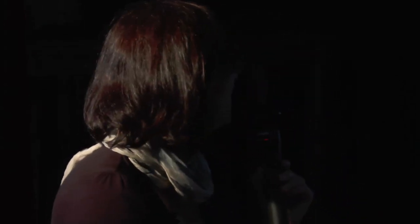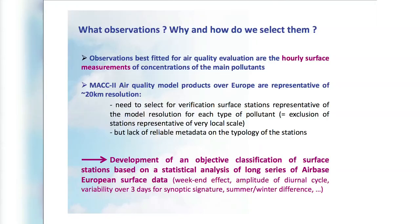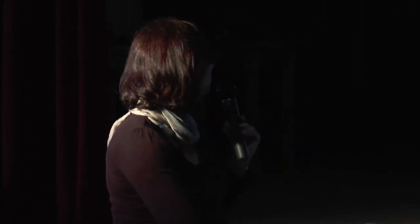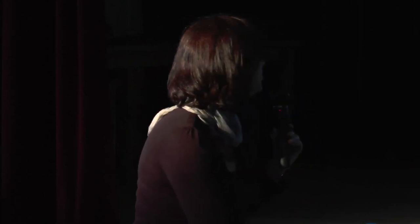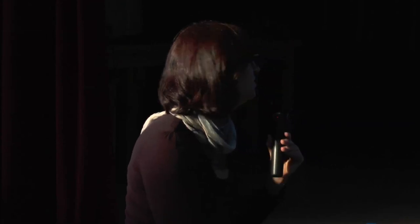In the MAC project before MAC-2, an objective classification of surface stations was developed, based on statistical analysis of a very long series of European surface measurements. This classification used different factors to characterize the station — the weekend effect, the amplitude of the diurnal cycle, variability over three days to detect synoptic signatures, and summer-winter differences — in order to objectively characterize each station using long time series.